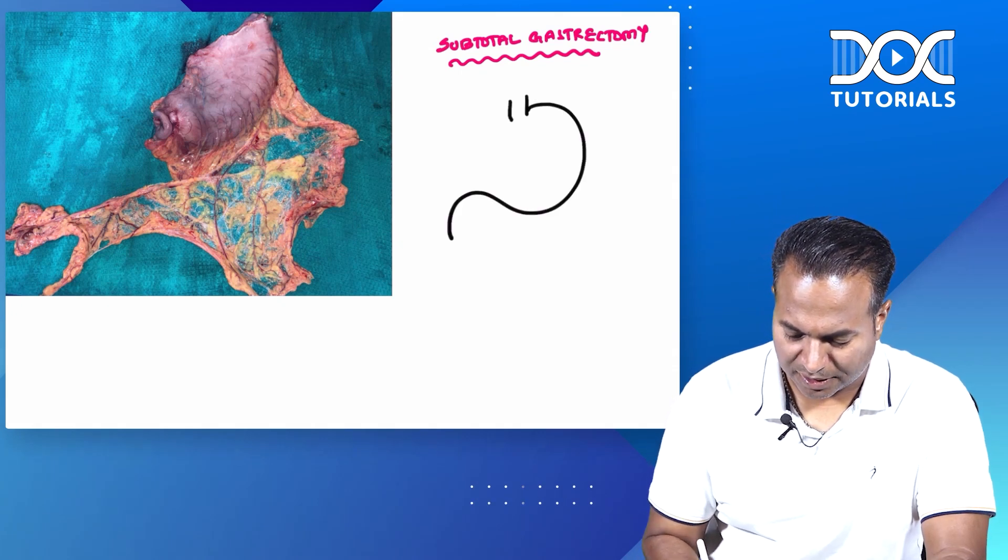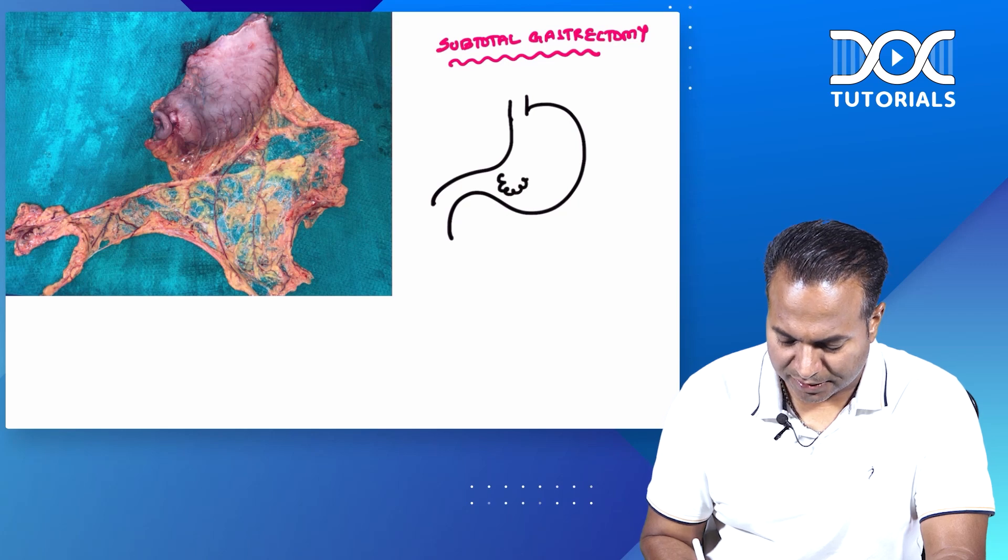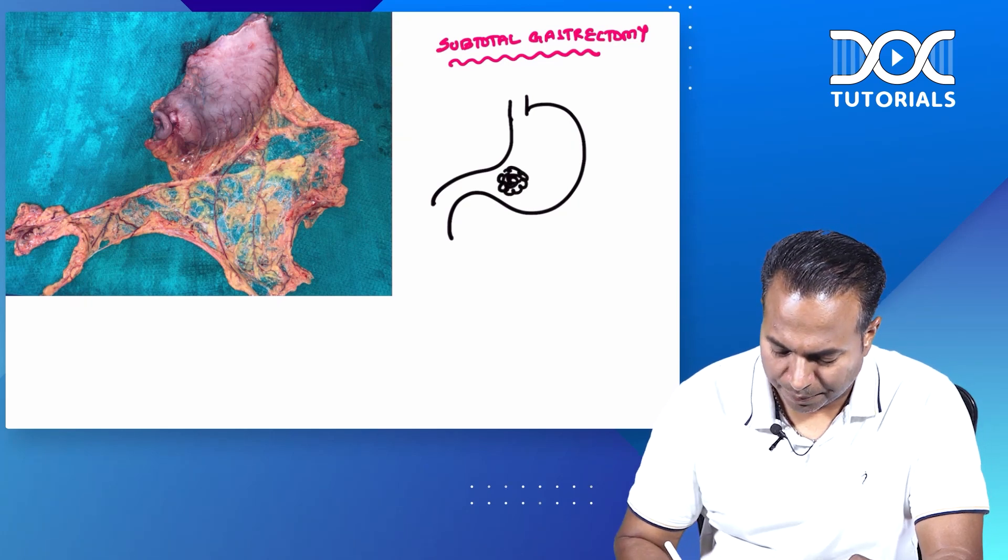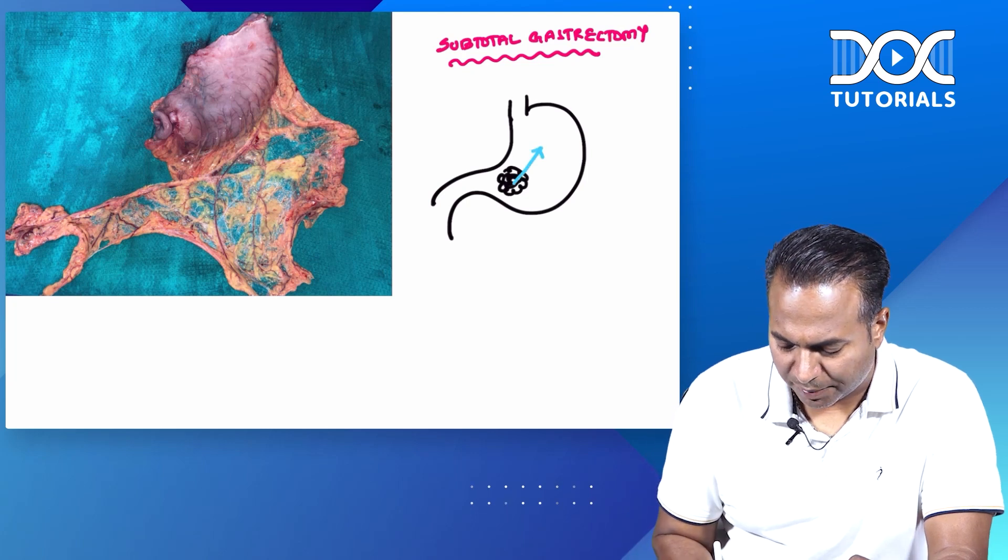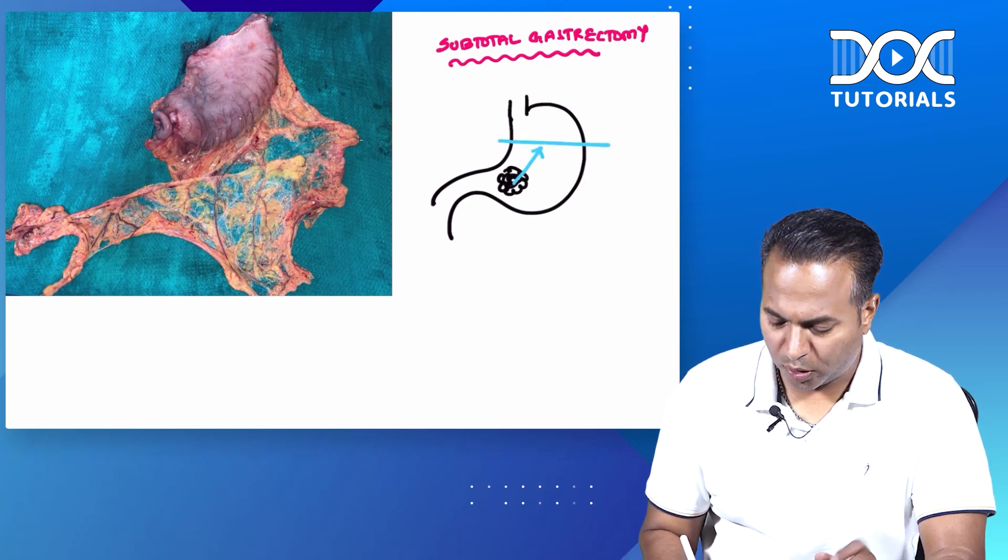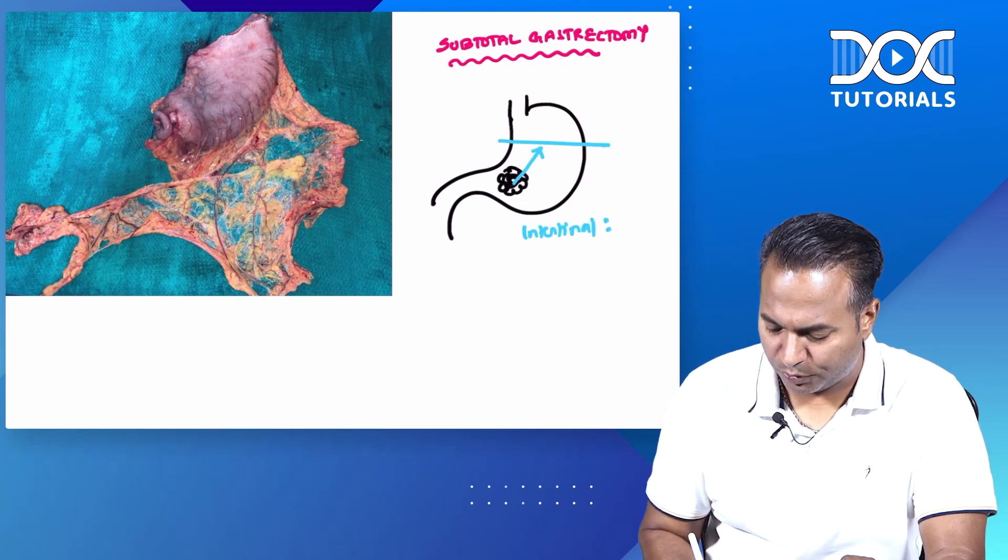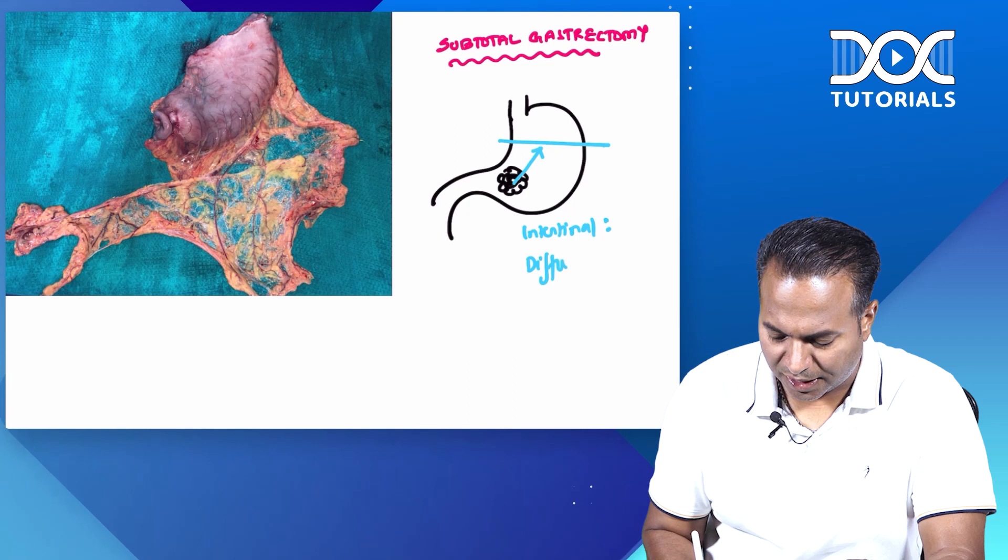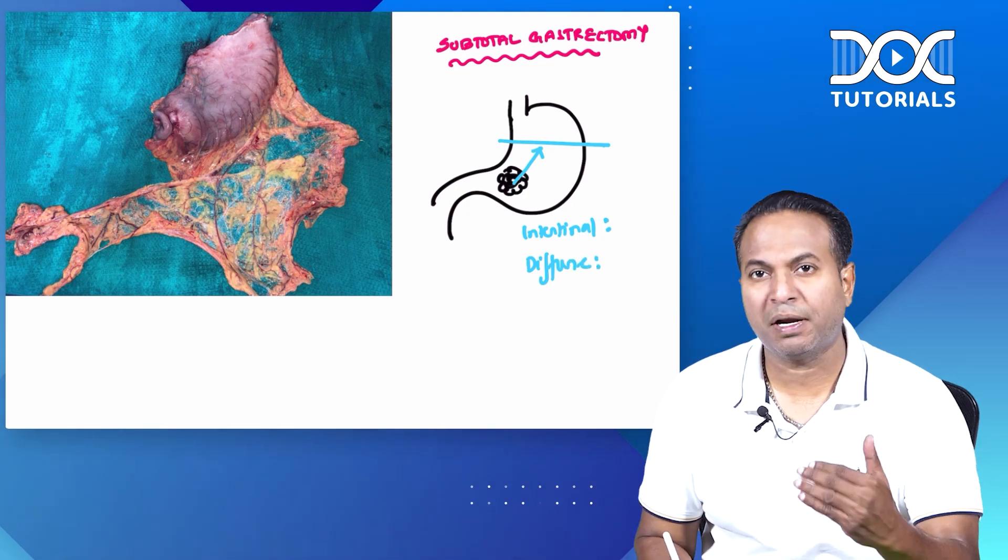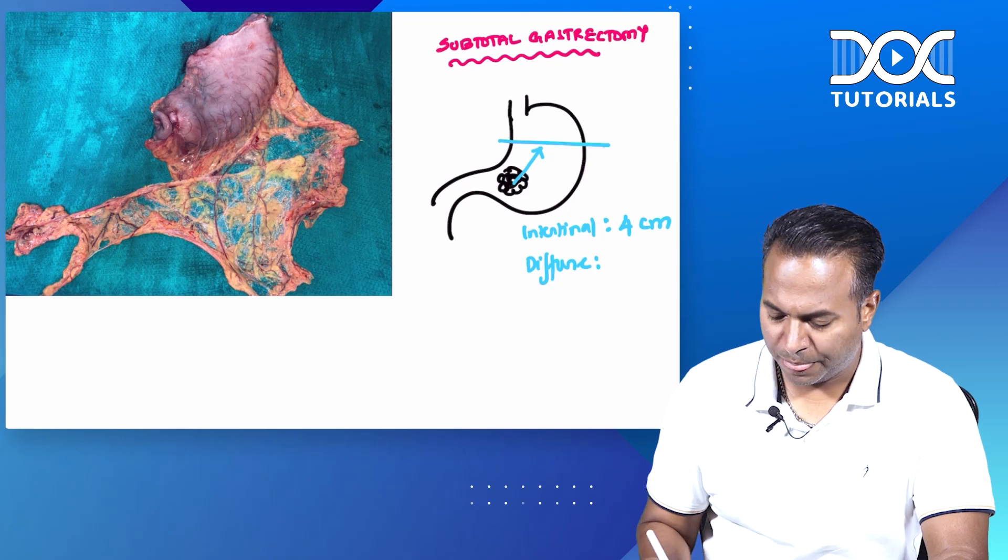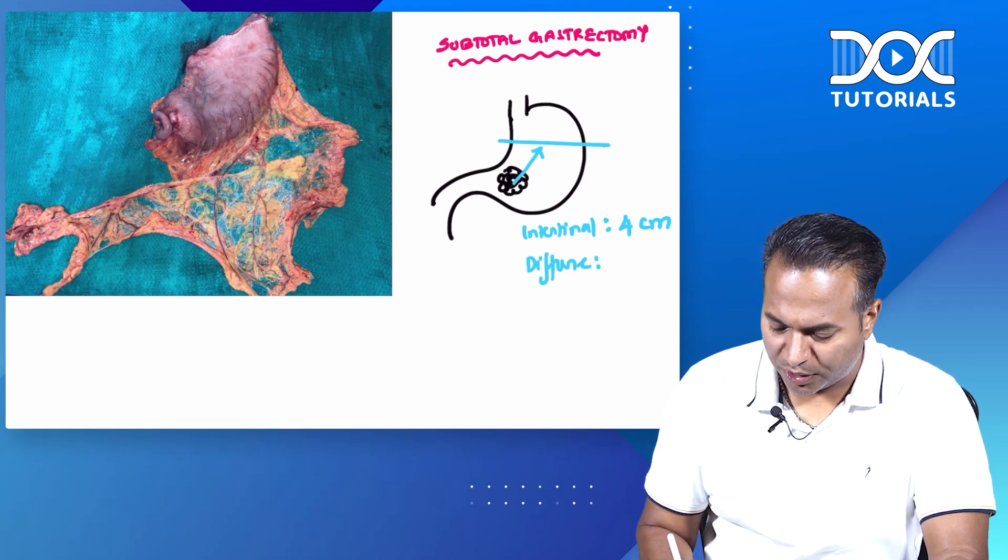This specimen is for cancer stomach. If there is cancer in the distal stomach, the first question is: how many centimeters proximally should you go and cut the stomach? There are two types of stomach cancer: intestinal and diffuse. In intestinal cancer, we should give a 4 cm proximal margin, and in diffuse gastric cancer, we should give a 6 cm margin.